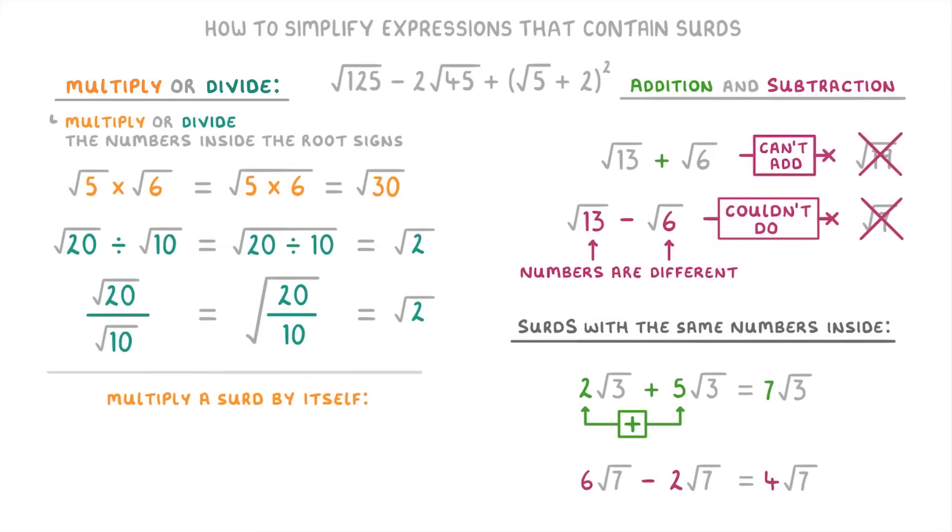The last rule is that when you multiply a surd by itself, like √7 times √7, the surds disappear and it becomes just 7. If it helps, you can think of it as the square root of 7 times 7, so the square root of 49, which is 7.